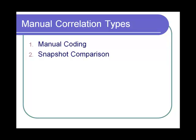Second, snapshot comparison. In this method, the script is run in playback mode and the resulting snapshot is compared with the snapshots in recording mode. The differences are correlated.